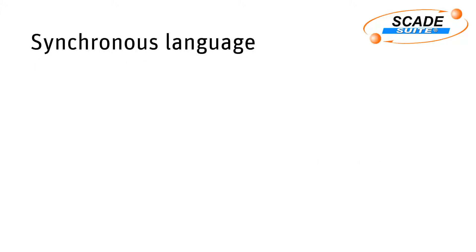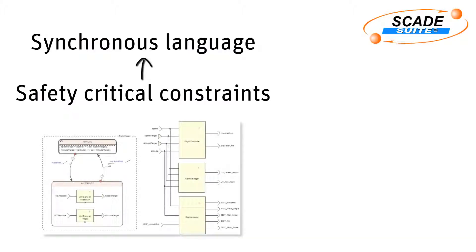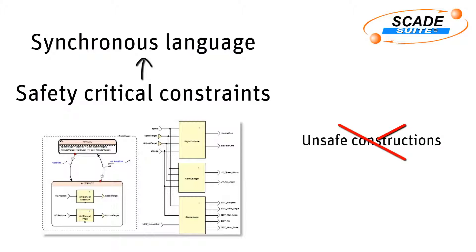The SCADE language belongs to the synchronous languages family. It is the result of 30 years of research and development, specifically designed to fulfill safety-critical application development constraints by focusing on the needs of such applications in terms of data and control flows, including state machines. In particular, it does not contain constructs that are potentially unsafe, such as unbounded loops or dynamic memory allocation. Dangerous constructs and unpredictable manipulations are prevented from being entered into the specification, and the models can be checked with formal verification.